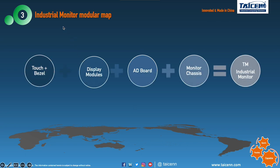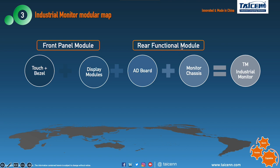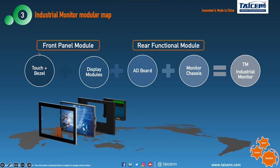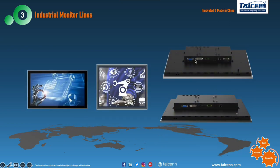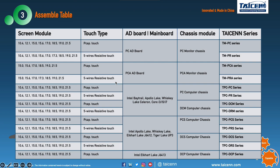Next, we talk about the industrial monitor modular map. The front panel modules and the rear functional modules — here the functional module is the AD board. The front panel modules are the same. We have two types: one with a PC rear box as PC modules, and the PC monitor modules. The front panels are the same. This example table shows our industrial panel PC and monitor series modular structures.